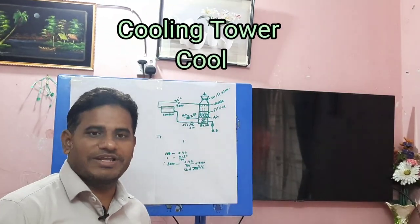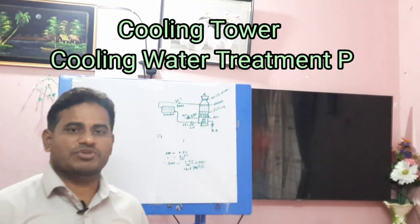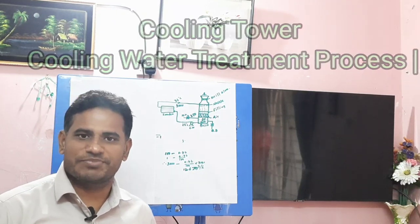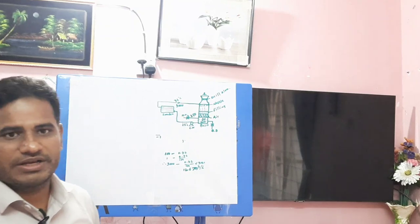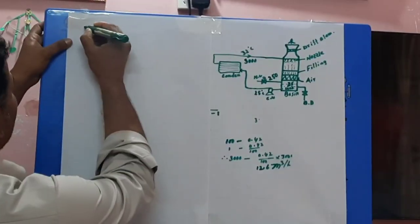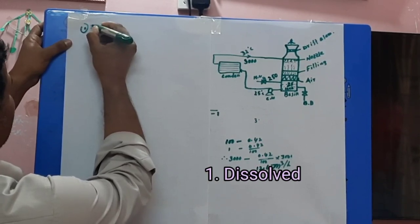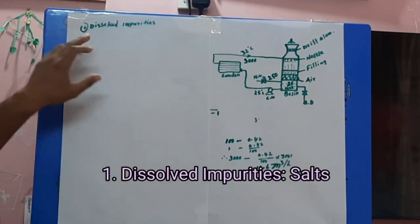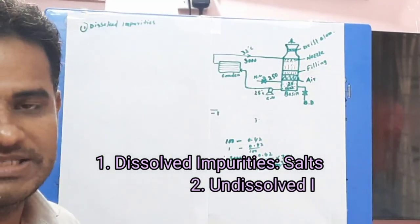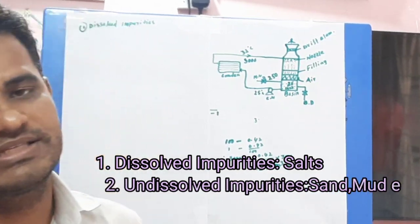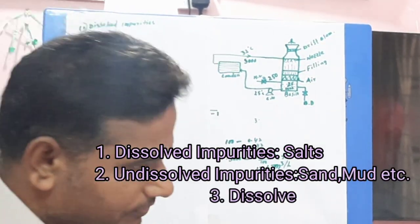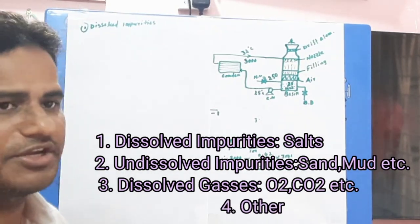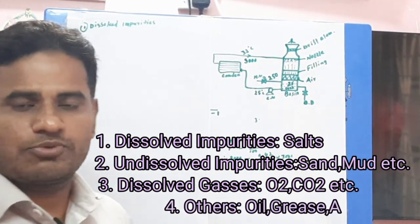Assalamualaikum viewers. Today I will explain cooling water treatment — what types of impurities are available in cooling water and how to reduce them. In the cooling water system, normally four types of impurities are available: dissolved impurities, undissolved impurities, dissolved gases, and others — meaning oil, grease, acid, and microorganisms.